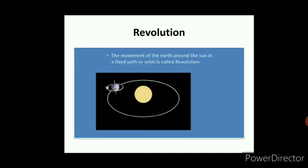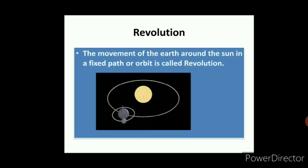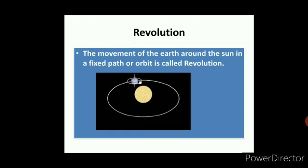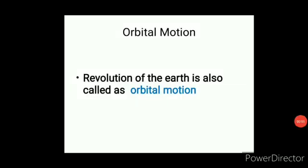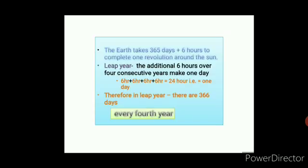Revolution — the movement of the earth around the sun in a fixed path or orbit is called revolution. Revolution of the earth is also called orbital motion. The earth takes 365 days plus an additional 6 hours to complete one revolution around the sun.